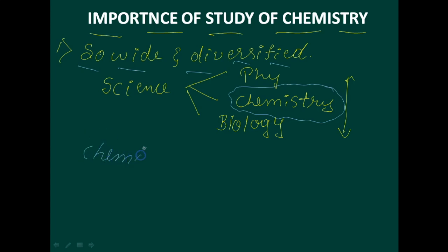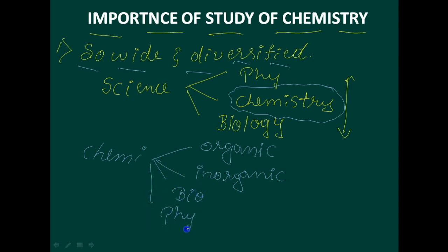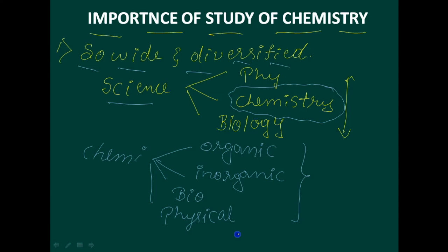Chemistry is also divided into inorganic chemistry, organic chemistry, biochemistry, and physical chemistry, and so on. Again, it is so wide. Not only these four branches — there are many more branches. That is why it is called so wide and diversified. This is the first point you should remember.